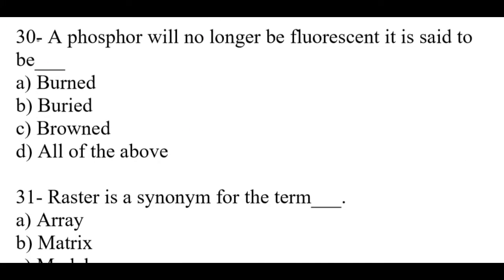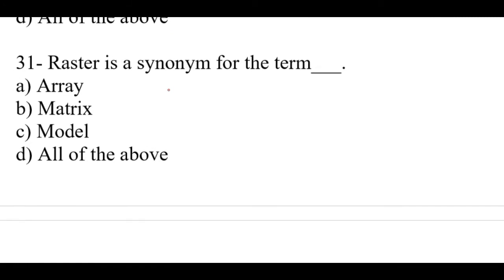Question number 30: A phosphor will no longer be fluorescent. It is said to be dash. Right option is A, burned. Question number 31: Raster is a synonym for the term dash. Right option is B, matrix. Question number 32: The rate at which the electron beam scans the surface of the CRT is often directly related to the frequency of the dash voltage. Right option is C, local line.